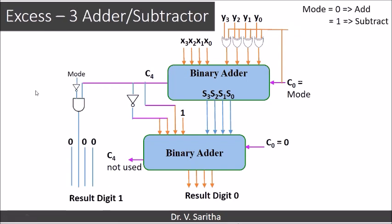Now if we want to combine XS3 addition and subtraction, we can see the complete circuit for performing both. Previously we covered the XS3 adder, and we have just seen the XS3 subtractor. If mod equals 0, the circuit performs addition; if mod equals 1, it performs subtraction.